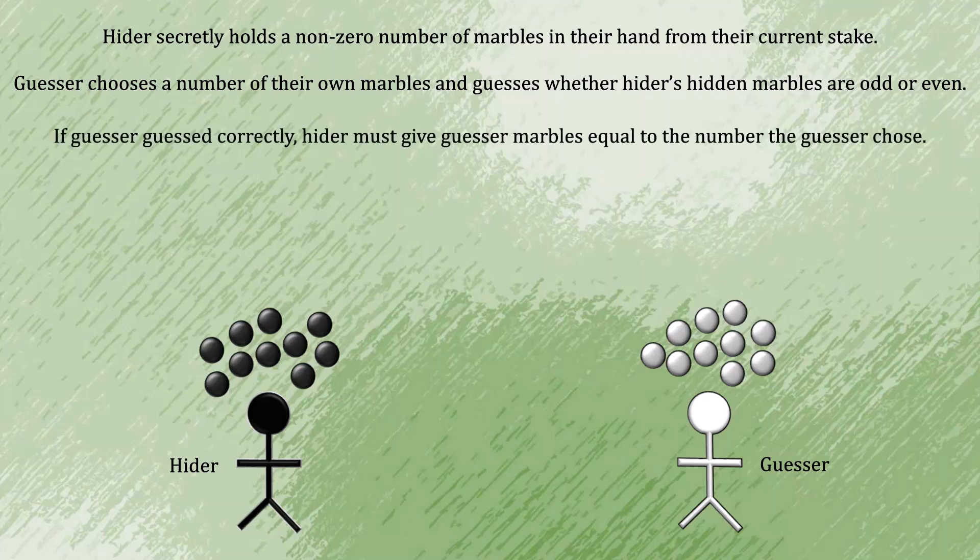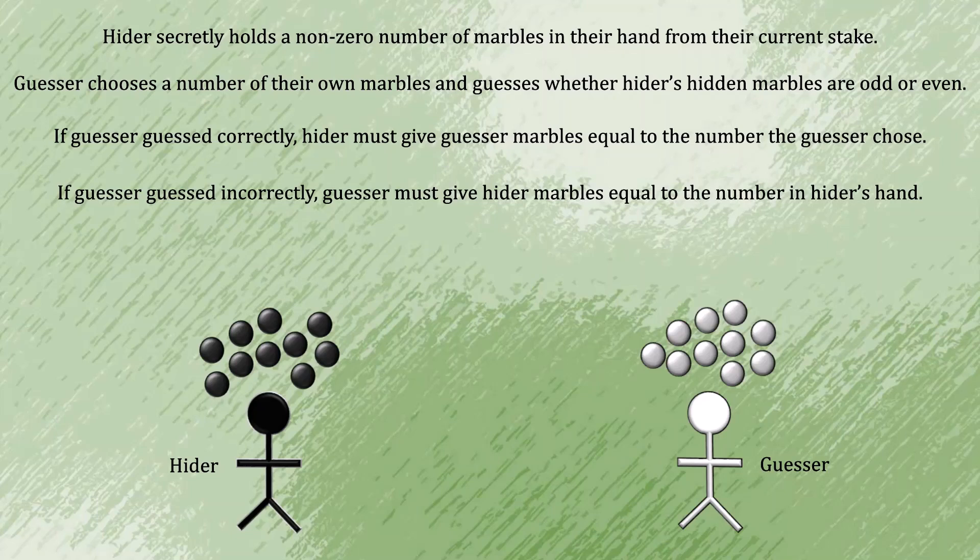If the guesser guessed correctly, the hider must give the guesser marbles equal to the number that the guesser chose. If the guesser guessed incorrectly, the guesser must give the hider marbles equal to the number in the hider's hand.